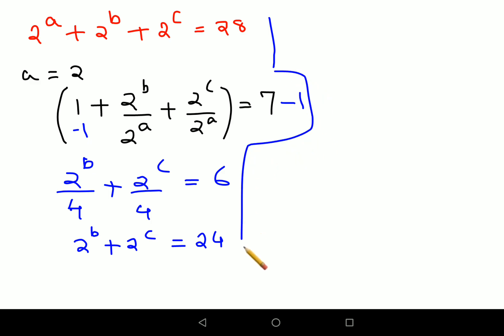Next, what we can do is we'll take again 2 raised to b common. I'm left with 1 plus 2 raised to c upon 2 raised to b is equal to...